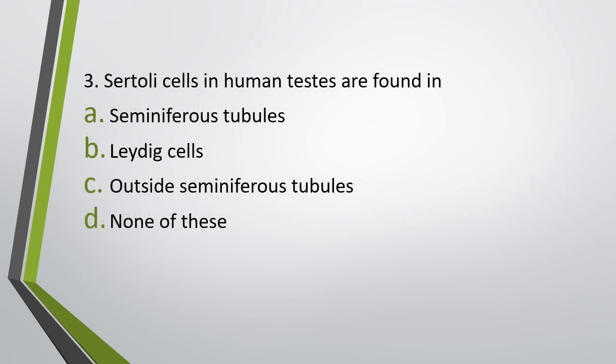Question number three. Sertoli cells in human testis are found in: seminiferous tubules, Leydig cells, outside seminiferous tubules, or none of these. Correct answer is option A — Sertoli cells are found within the seminiferous tubules.